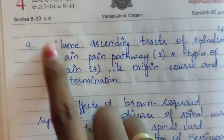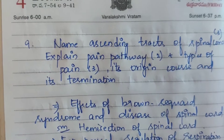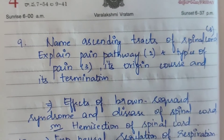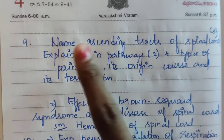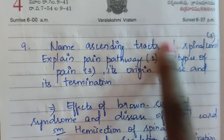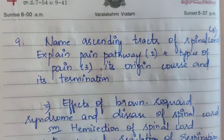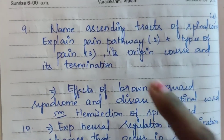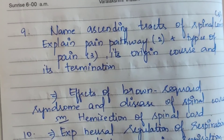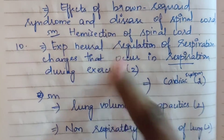This is an older question topic: Name ascending tracts of the spinal cord, explain pain pathway and types of pain — their origin, course, and termination. Name ascending tracts of spinal cord asked three times; explain pain pathway asked two times; types of pain three times. Also: effects of Brown-Séquard syndrome and hemisection of the spinal cord.